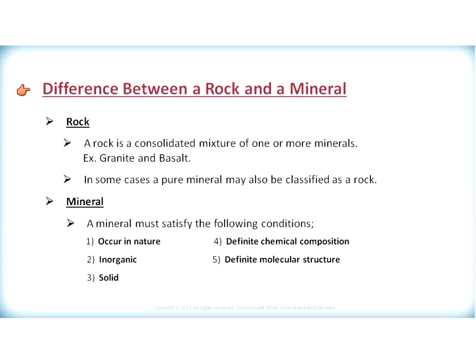Let's first look at the difference between a rock and a mineral. A rock is a consolidated mixture of one or more minerals. Some igneous examples of rocks include granite, which makes up the Earth's continental crust, and basalt, which is the primary rock found in the Earth's oceanic crust. In some cases, a pure mineral may also be classified as a rock — gypsum and halite would make up rock salt.